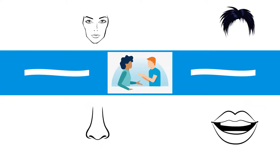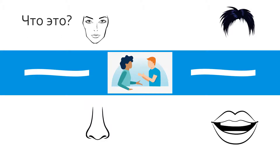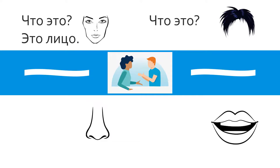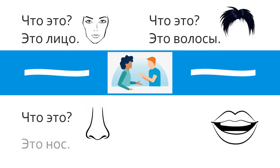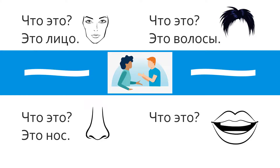A little more practice — I want you to answer each question yourself from memory. We have a picture of hair — волосы. Bottom left, an easy one, also hair. And then bottom right — can you remember it?